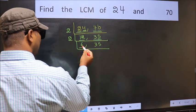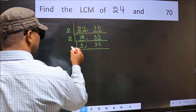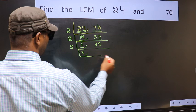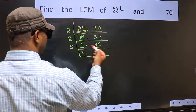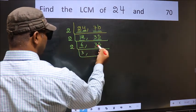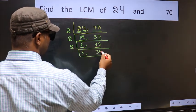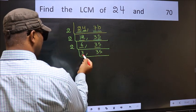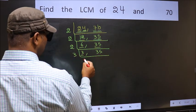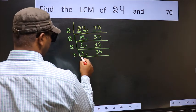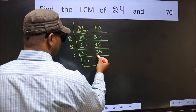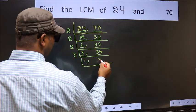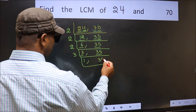Now here we have 6 — 2×3 is 6. The other number 35 is not divisible by 2, so we write it down as it is. Now here we have 3 — 3 is a prime number, so 3×1 is 3. The other number 35 is not divisible by 3, so we write it down as it is.